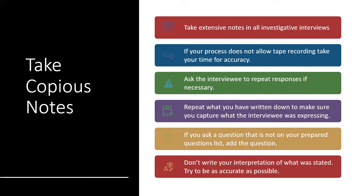During your investigative interviews, you should be taking copious notes. Take extensive notes in all investigative interviews. If your process does not allow for tape recordings, take your time for accuracy. Ask the interviewee to repeat responses if necessary and for clarification, and repeat back what you have written to confirm accuracy. If you ask a question not on your prepared list, add it to note that it was asked. Don't write your interpretation — try to be as accurate as possible. Note any behavior, movements, hesitation to answer, or inaccuracies, because later you will need to make credibility determinations.